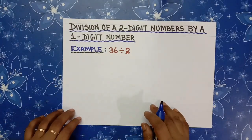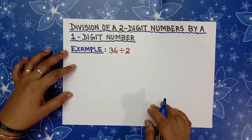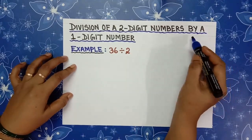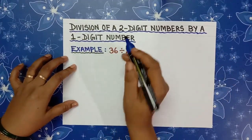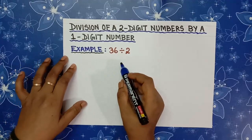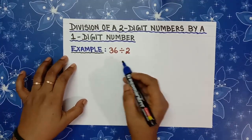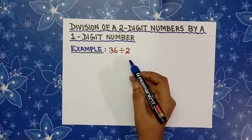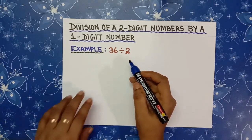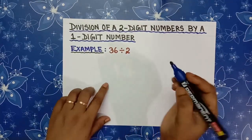Now next, let's do division of 2-digit numbers by 1-digit number. For example, 36 divided by 2. So arrange these numbers in their places.